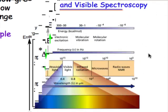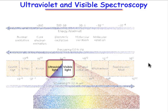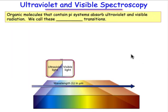Here's a reminder of the relationship of the ultraviolet and visible region to the electromagnetic spectrum. We're interested in the ultraviolet visible region because it's this region where molecules that contain π systems absorb. We call these absorptions electronic transitions.